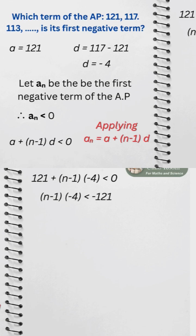Transposing 121 to the other side, we get negative 121 on the right hand side. Dividing with negative 4 on both sides will reverse the inequality, so now the less than sign will become greater than.